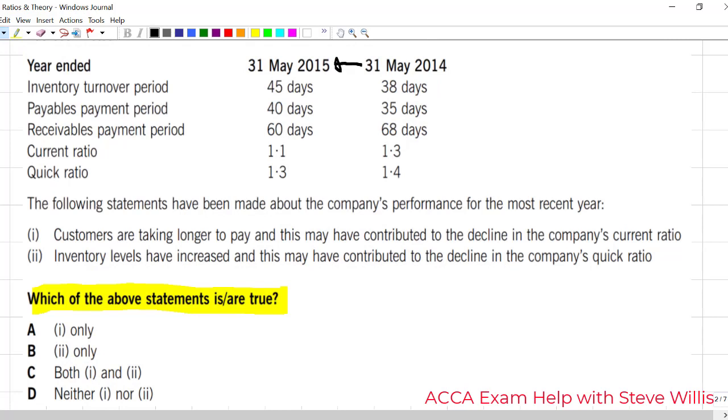The inventory turnover period increased. Without any other information, that's a bad sign. That means we are holding inventory longer, we're less efficient at converting our raw materials into finished goods.